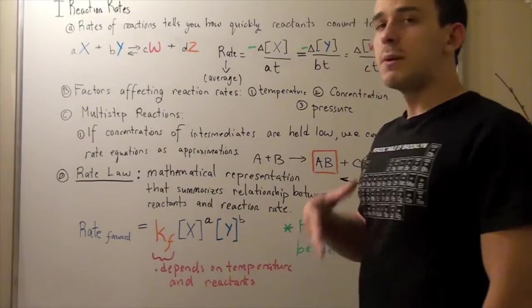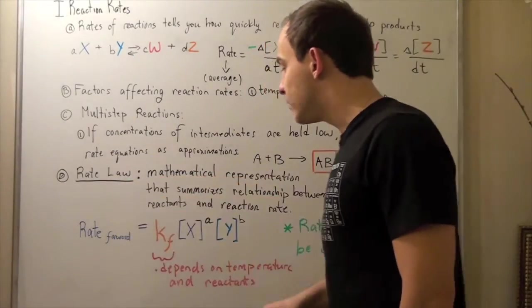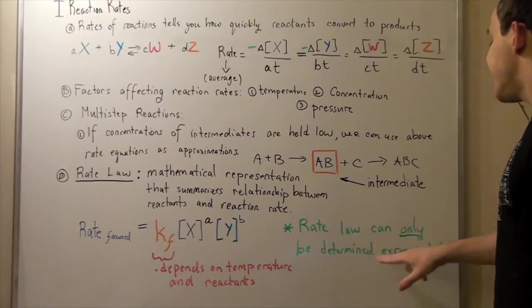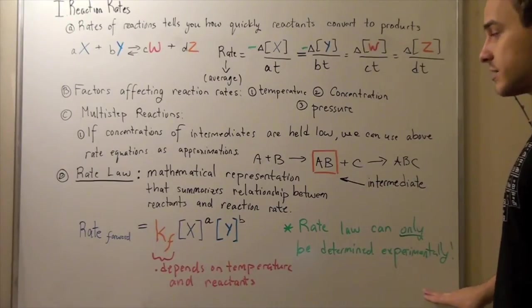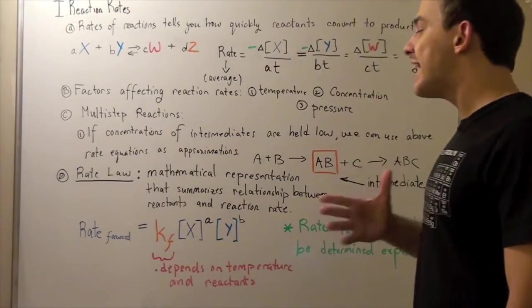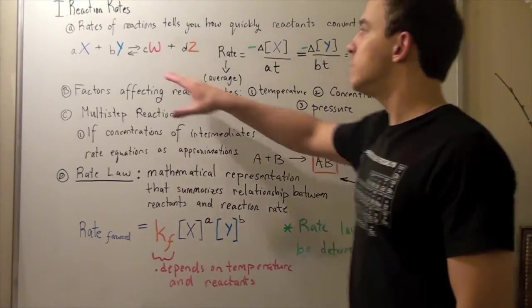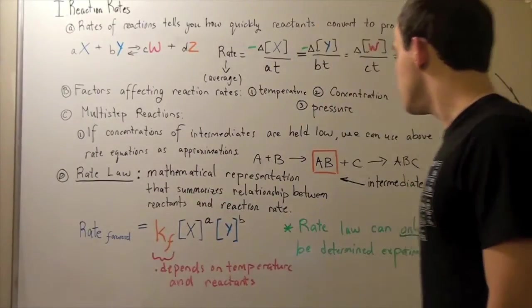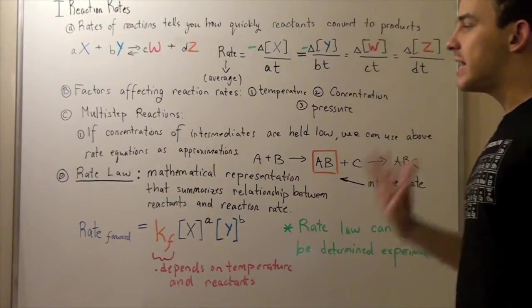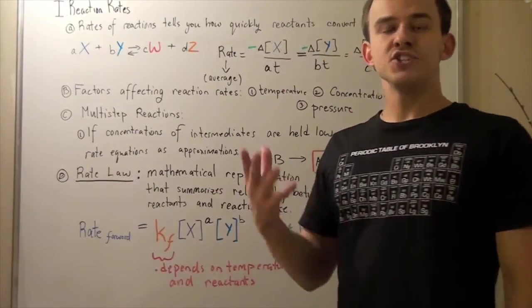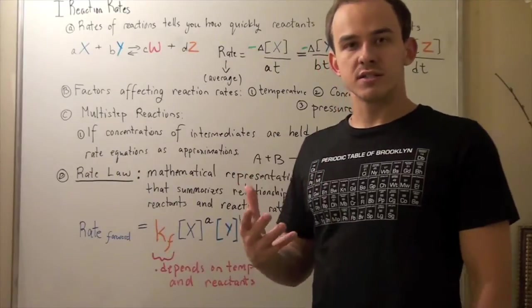One last thing I want to mention is that this rate law, this equation is determined strictly using experimental results. That's the only way we can determine this relation. We can't determine this relation using the formula above. We have to determine this formula using experiments. In my next lecture, we're going to see exactly how we determine our rate law from initial experimental results.